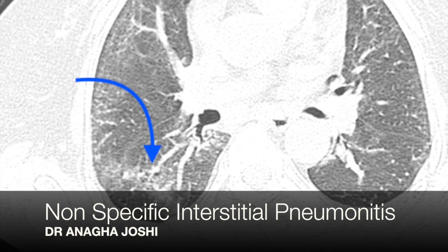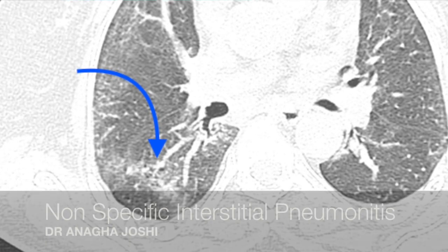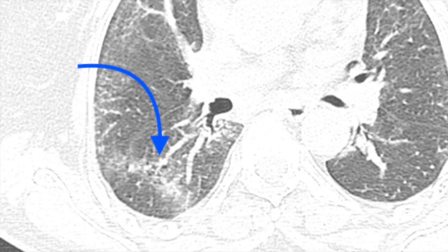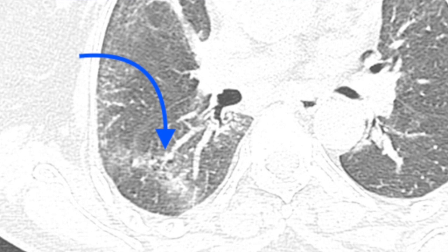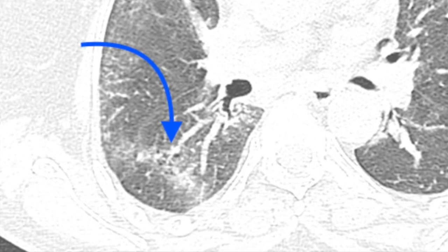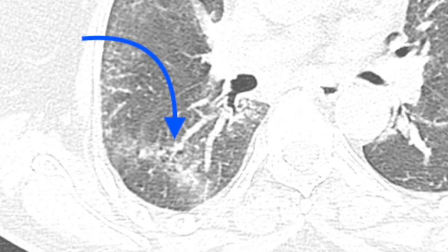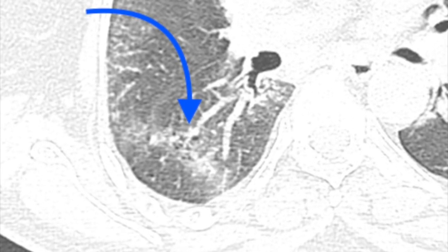Non-specific interstitial pneumonia. And this was positive ANCA. So now we know this is NSIP with positive ANCA — some kind of a connective tissue disorder. And the pattern in that connective tissue disorder, just finding it NSIP-like.